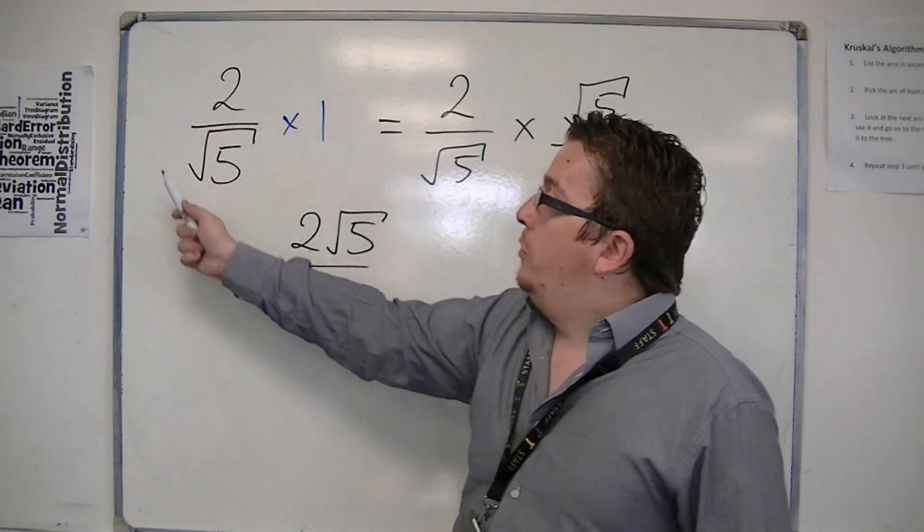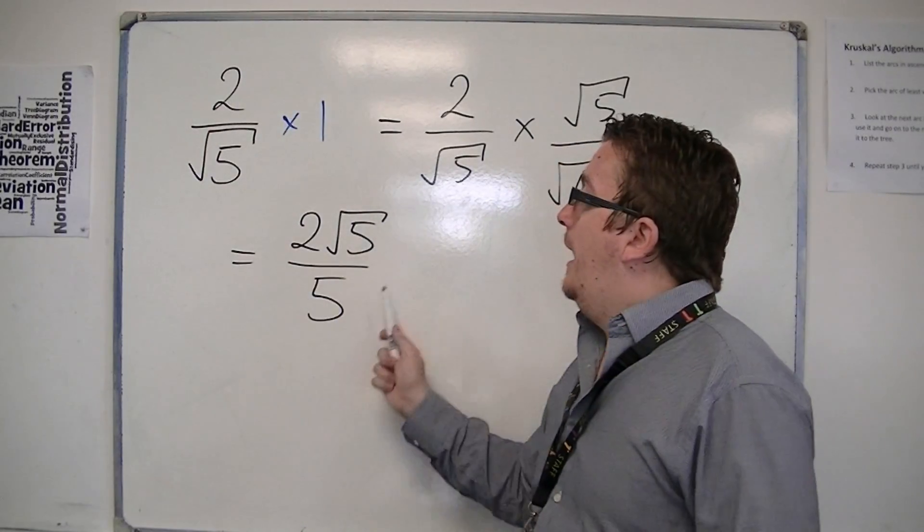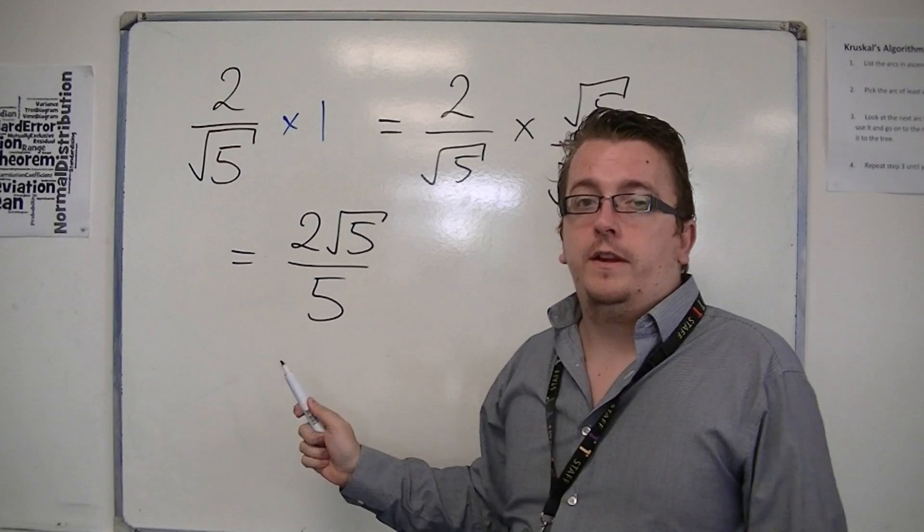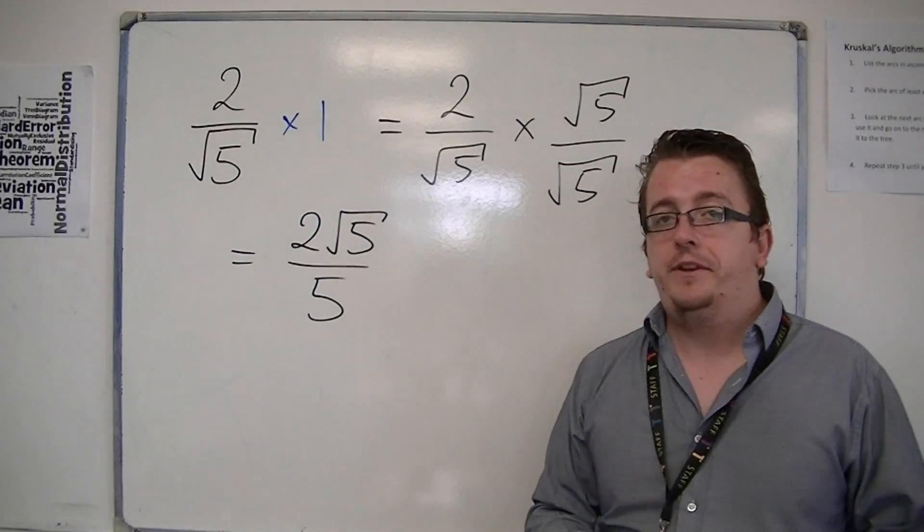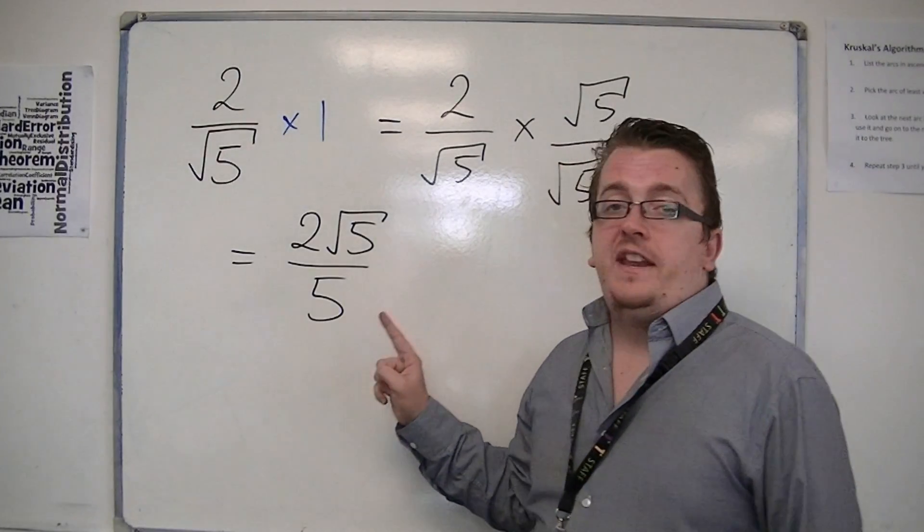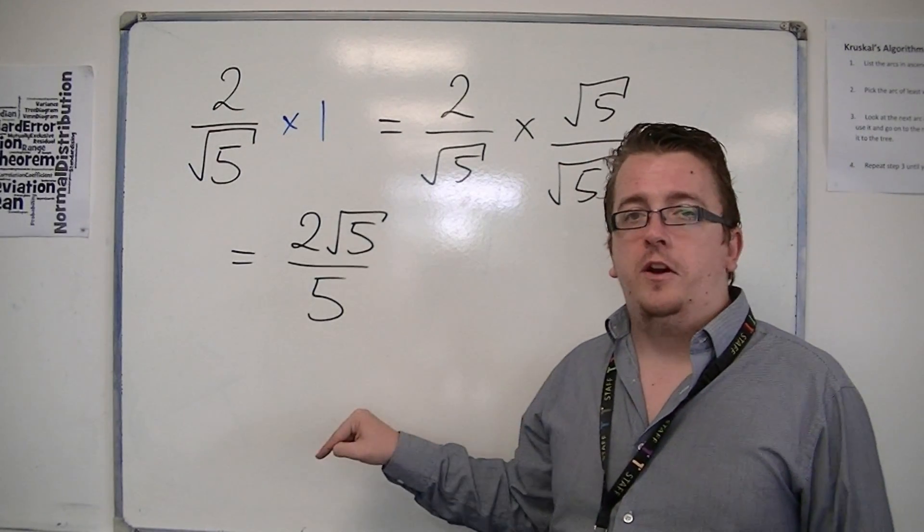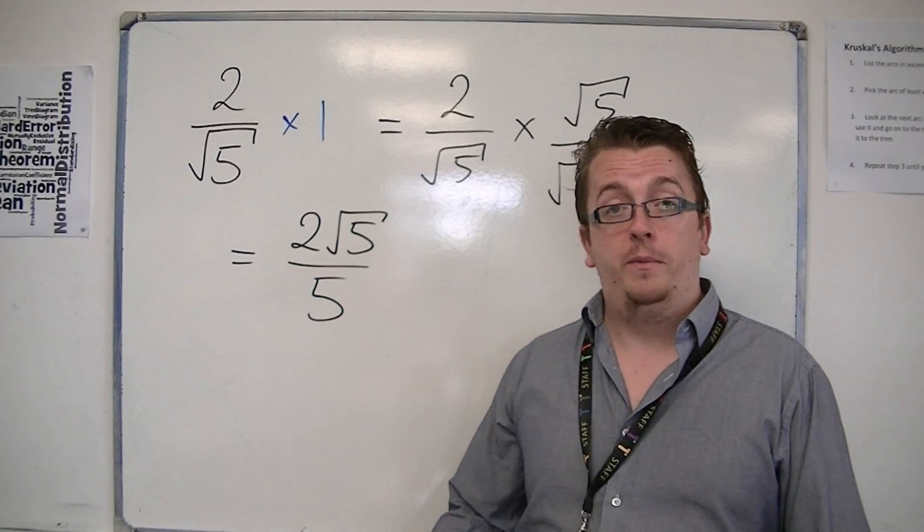So, I've made sure that this fraction now is the same thing as this fraction. It's just written in a different way. They are exactly the same thing. But now, I don't have an irrational number in the denominator. Hence, that's why we call it rationalising the denominator.